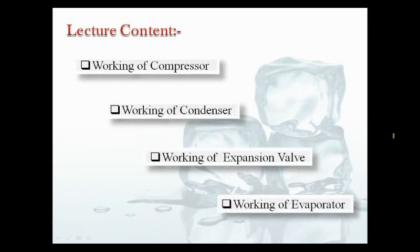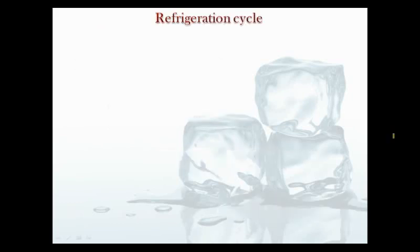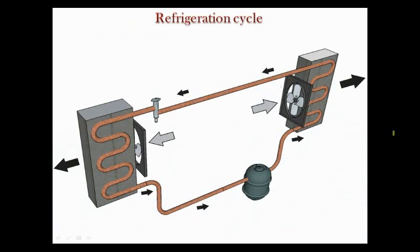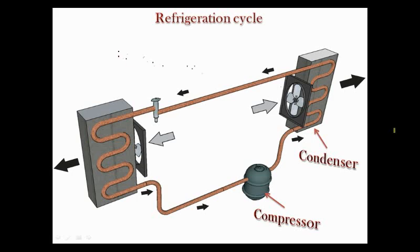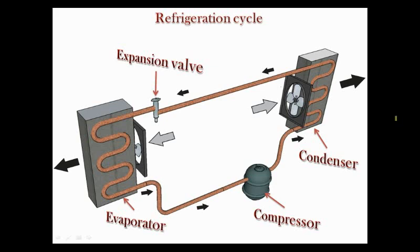Before moving further, let us first discuss where these components lie on a refrigeration cycle. First comes the compressor, next is condenser, after condenser comes the thermostatic expansion valve, and at the end, the evaporator where the actual cooling takes place. After the evaporator, the cycle repeats itself.